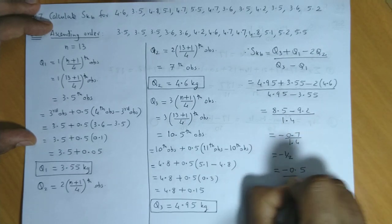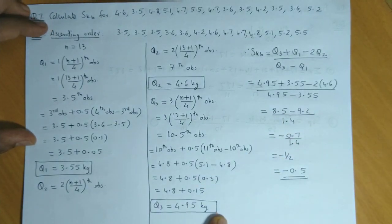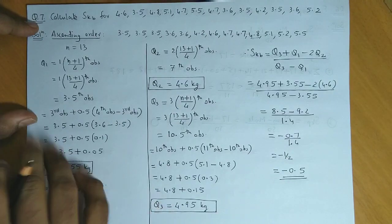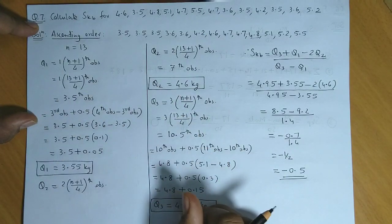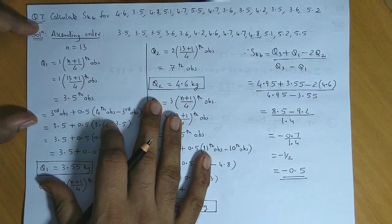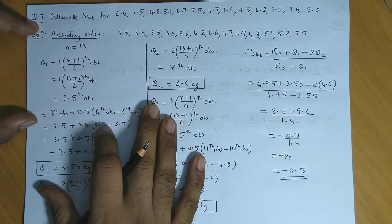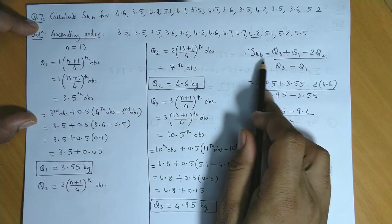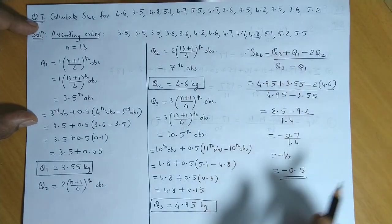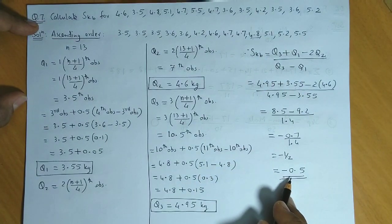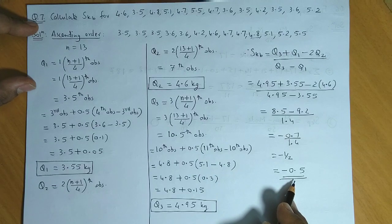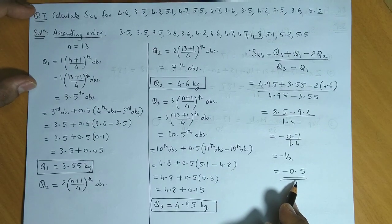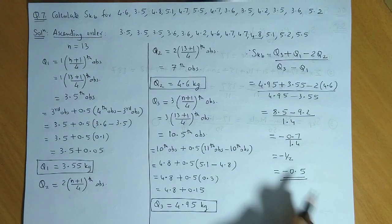So basically you calculate the 3 quartiles Q1, Q2, Q3 from raw data set, and once you have 3 quartiles then use the formula for SKB and you obtain SKB as minus 0.5. Negative value indicates that the data has negative skewness.